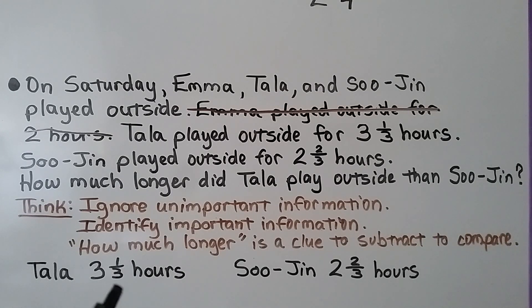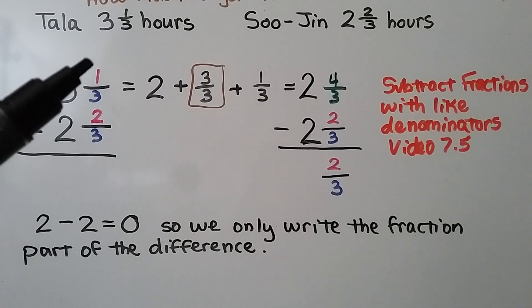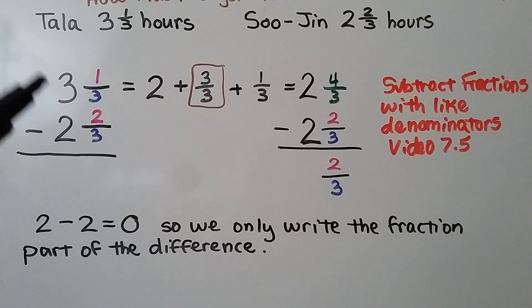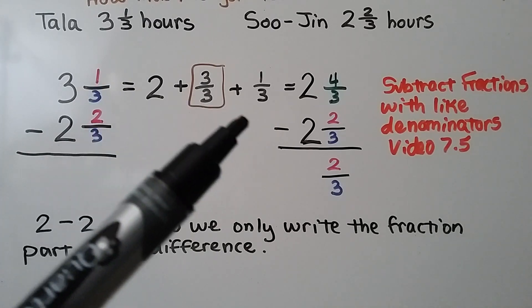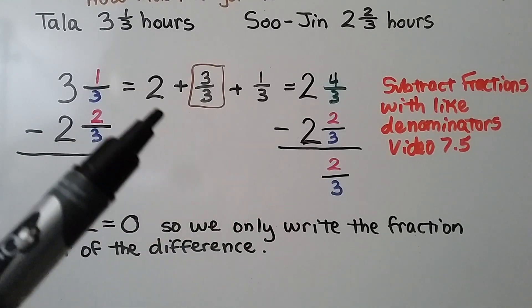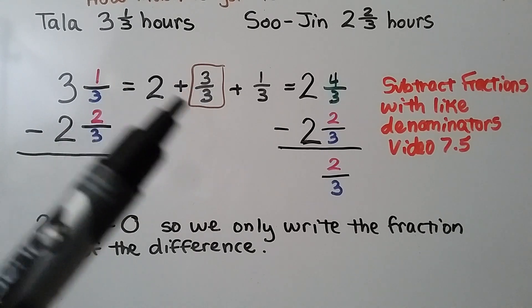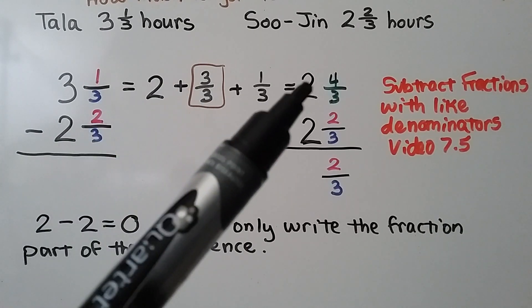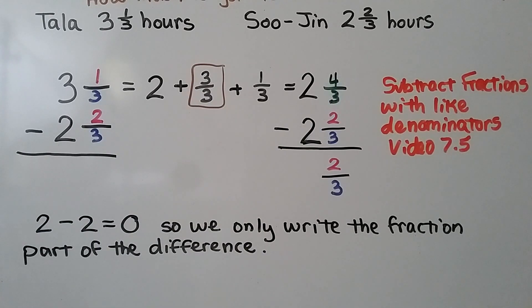Tala was 3 and 1 third hours and Soo Jin was 2 and 2 thirds hours. We need to subtract 3 and 1 third minus 2 and 2 thirds. The 1 is too small to take away a 2, so we rename 3 and 1 third as a lesser whole number with a fraction greater than 1. We have 2 plus 3 thirds, using the denominator of 3. That gives us a whole number of 2 and 3 plus 1 is 4, giving us 4 thirds for the fraction part.